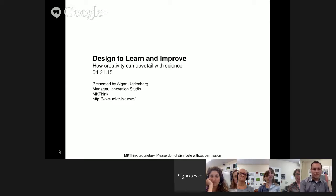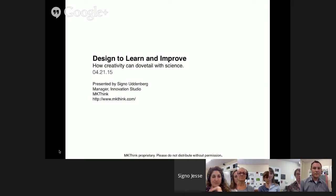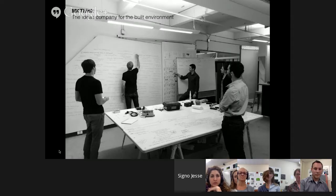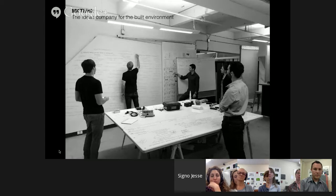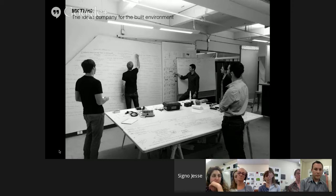So, Design to Learn and Improve — how creativity can dovetail with science. My name is Signo Unberg. I lead the experience and design teams through the Innovation Studio at MKThink, a design consulting firm based in San Francisco. We've worked with schools large and small, kids big and small across the country — including Hillbrook, Town School for Boys, Alt School, and Stanford University. For the past couple of years, we've been working with Hillbrook to explore designs of intentional, agile learning environments at the campus, building, and classroom scales.